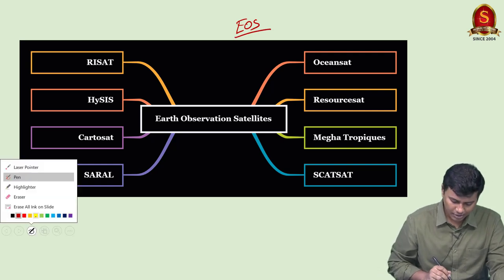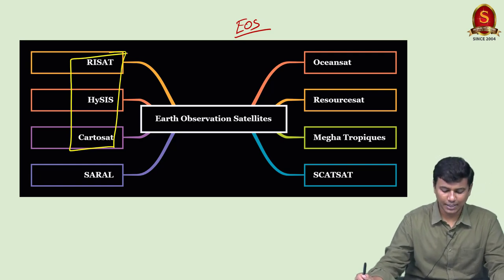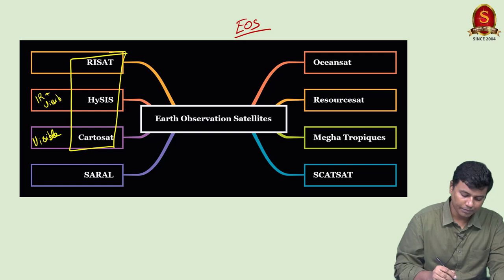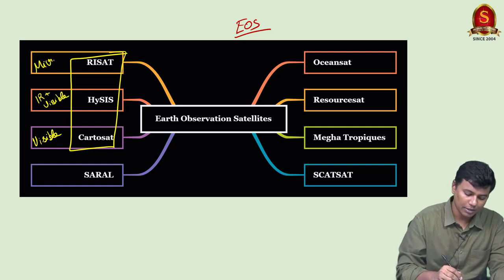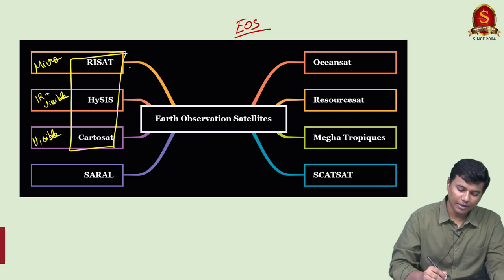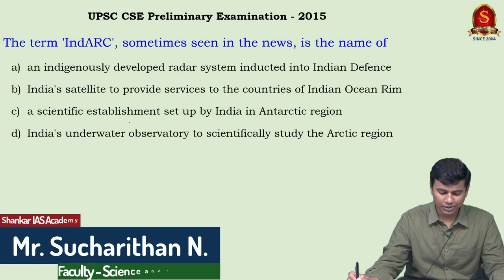Three important Indian Earth observation satellites: Cartosat uses optical/visible spectrum imaging. HISIS uses infrared plus visible spectrum. RISAT (Radar Imaging Satellite) uses microwave for producing images. These three are very important — please go through them.